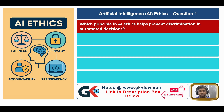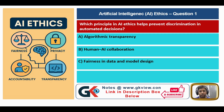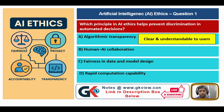Discrimination means difference or bias or partiality in automated decisions. The options are: option A, algorithmic transparency — transparency of the code in the back end; option B, human-AI collaboration — collaboration between human beings and AI systems; option C, fairness in data and model design; option D, rapid computation capability — rapid means fast computation capability.